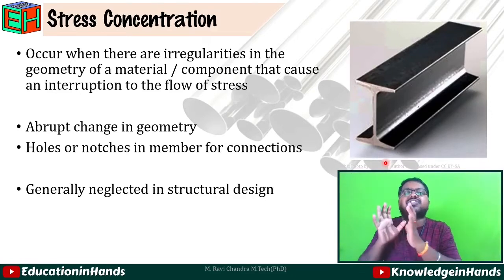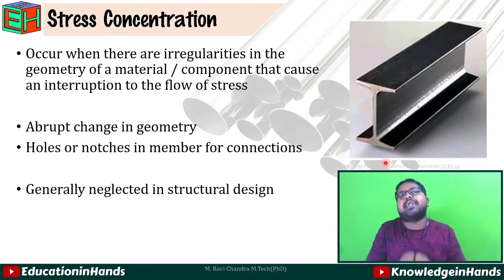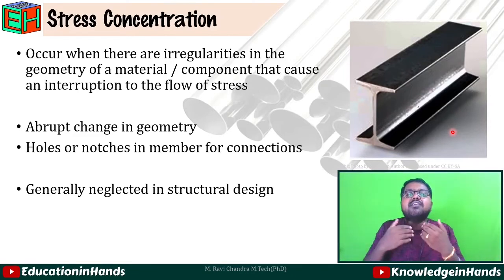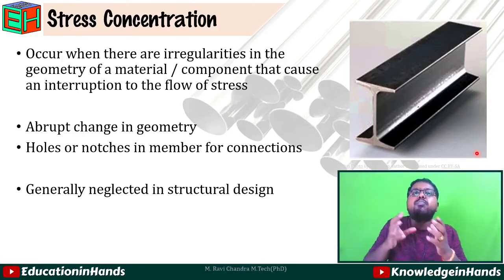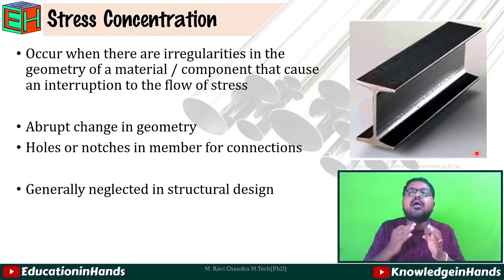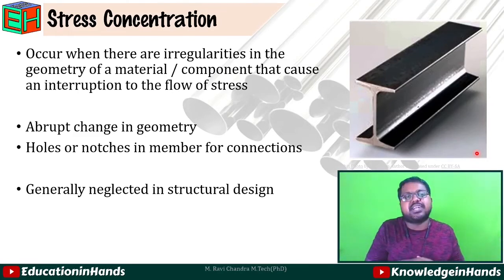The last one is stress concentration, which occurs in a member when there are irregularities in its geometry. For example, in an I-section beam with a top flange, bottom flange, and web, the change in shape from flange to web leads to stress concentration at the joint points. This abrupt change in geometry causes stress concentration in the material. Additionally, holes made for riveting or bolting also increase stress concentration at locations where material is lost, causing an interruption to the flow of stress. In general design, however, this kind of stress concentration is neglected.